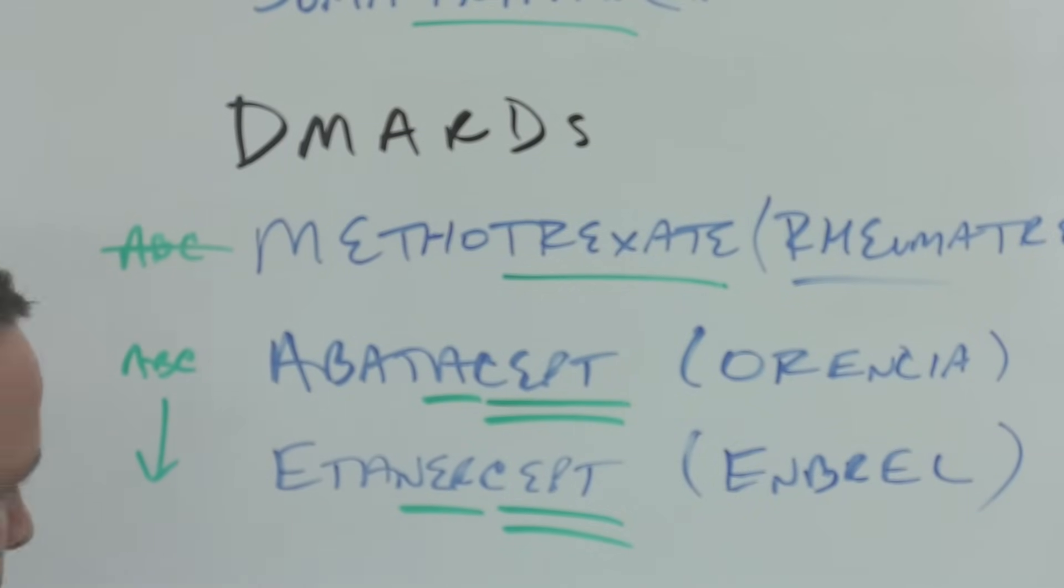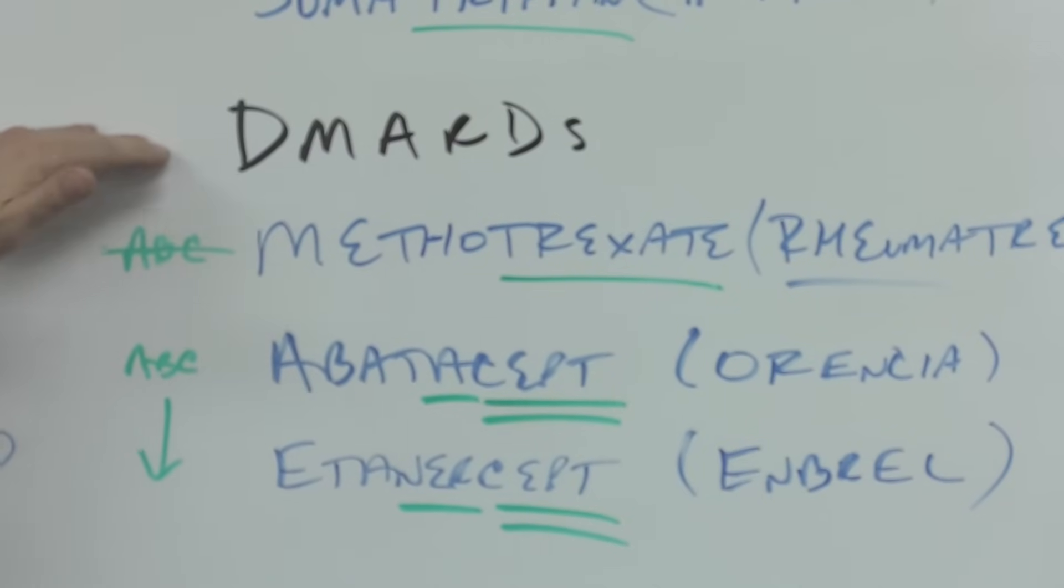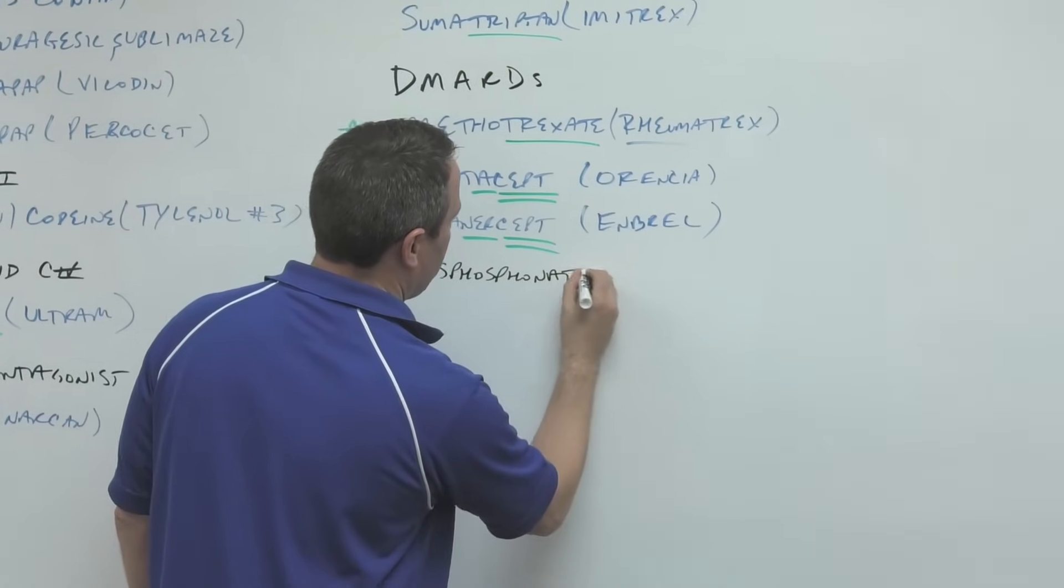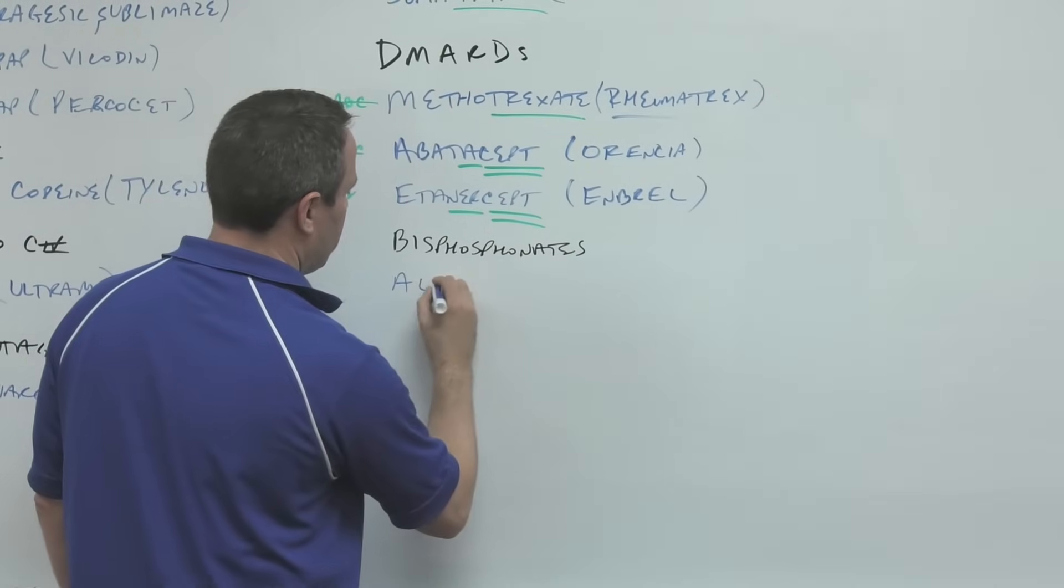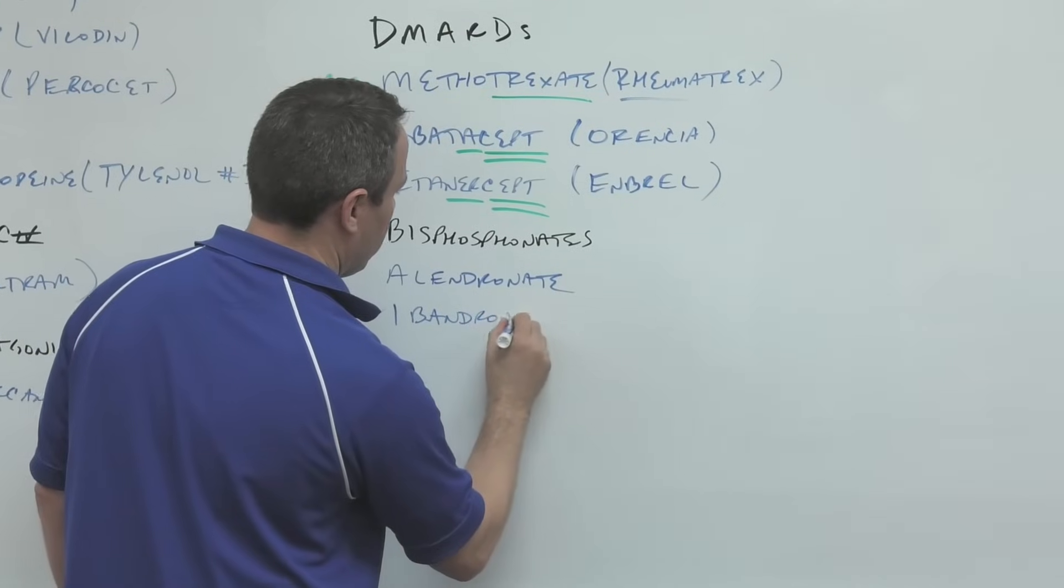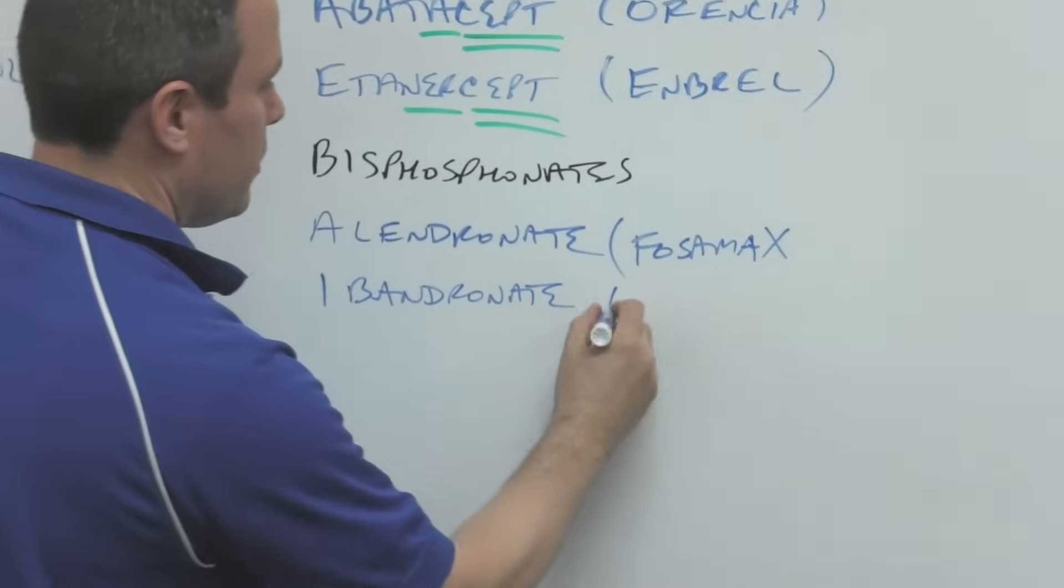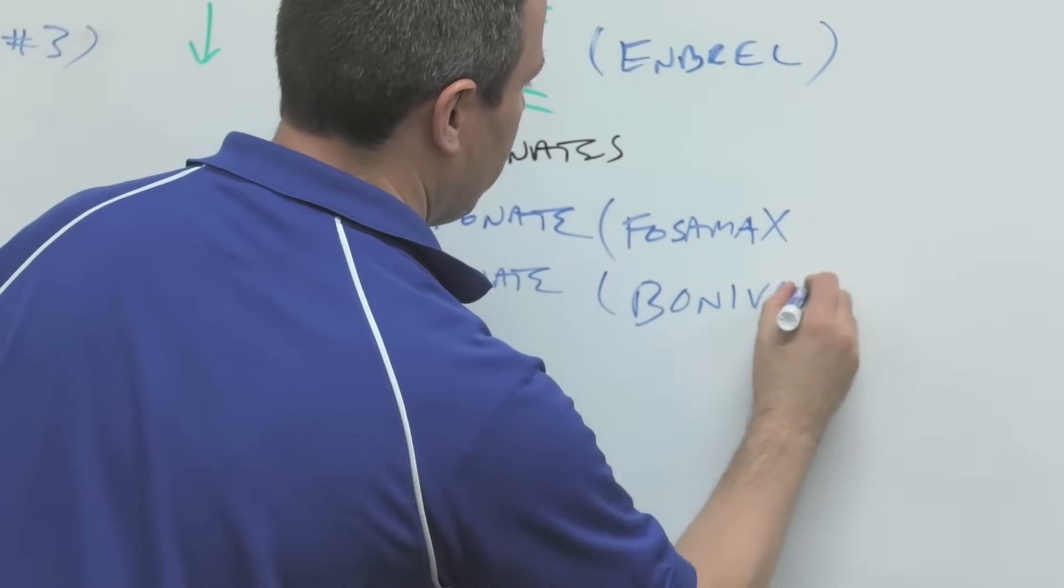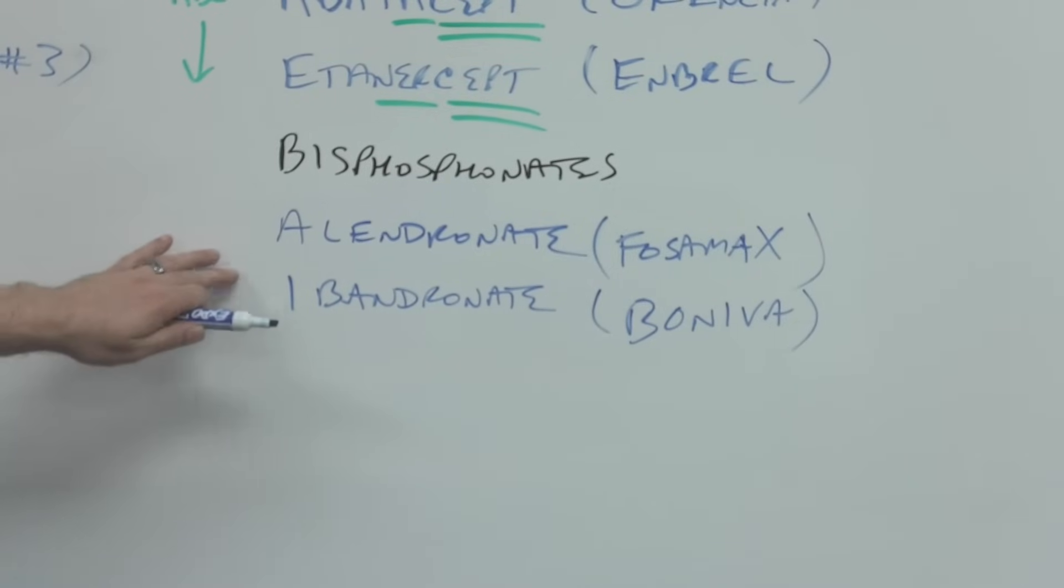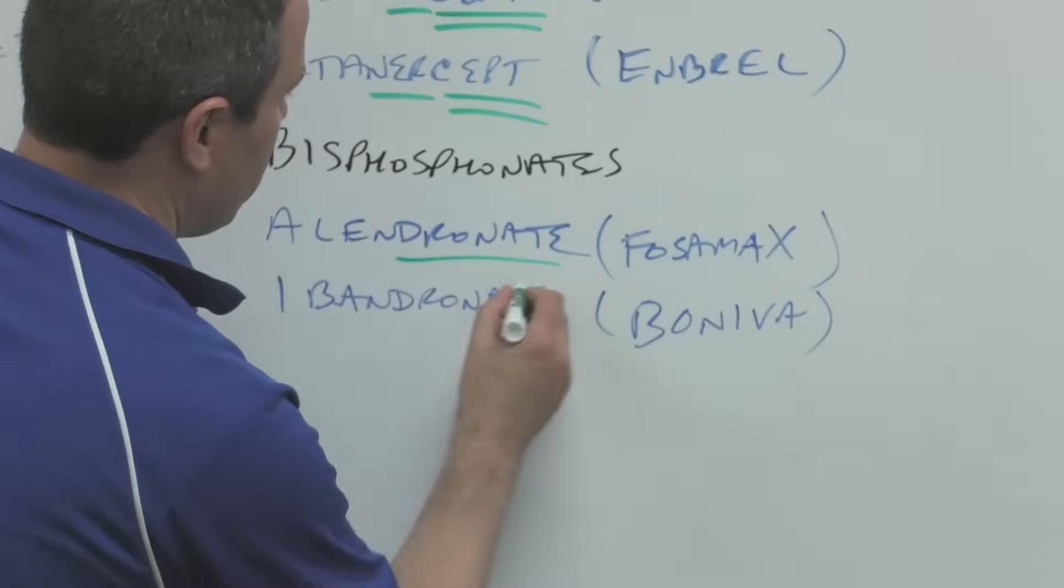So after the DMARDs comes something for—so the way I remember it is we start with the head, then we go to the joint, and then from the joint we're going to go to the bone. So we have two bisphosphonates: alendronate, Fosamax—students like to think of fossil—and ibandronate, Boniva, has the word bone in it. And these aren't for osteoarthritis like the NSAIDs would be; these are for osteoporosis, so some degradation of the bone. From there we have the muscle relax—and then the dronate stem, that tells you that these are bisphosphonates.